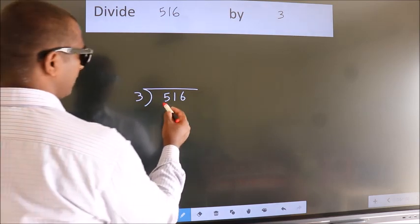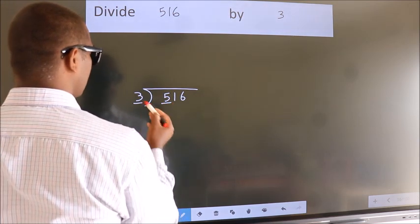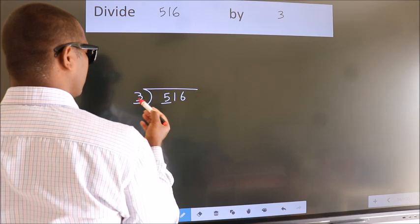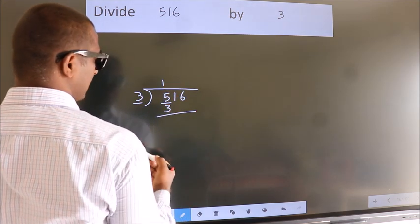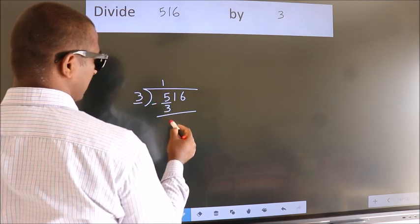Next, here we have 5, here 3. A number close to 5 in the 3 table is 3 ones, 3. Now we should subtract. We get 2.